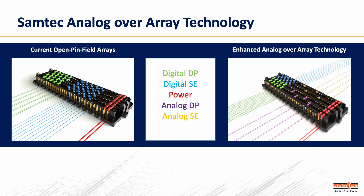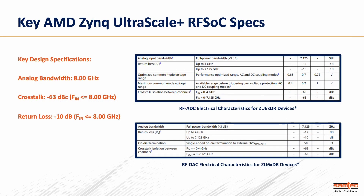Why do we do that? As AMD Xilinx came out with their Zinc Ultrascale solution, and as it has progressed from one generation to the next, there are key RF parameters in their data sheets that any system designer has to hit to make signal integrity flow cleanly throughout the system. These are excerpts from data sheets for the device on the ZCU-208 — the ZCU-6x DR devices. You can see the RF-ADC and RF-DAC electrical characteristics. For these specific platforms, the analog bandwidth is about 8 gigahertz, the crosstalk specification out to 8 gigahertz was roughly 63 dBc, and return loss of at least 10 dB. We were able to hit those specifications from a connector and channel standpoint.